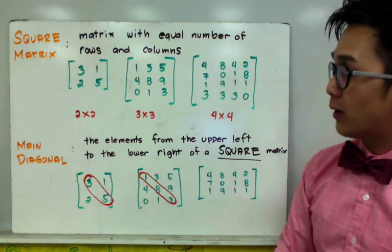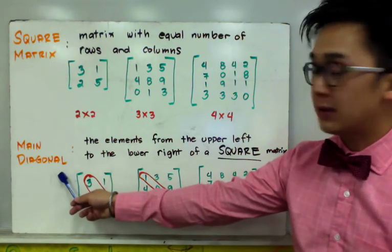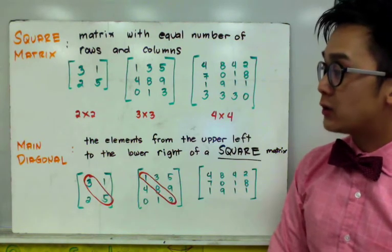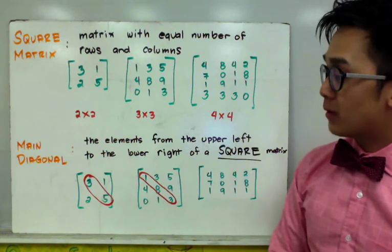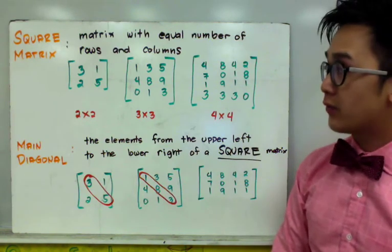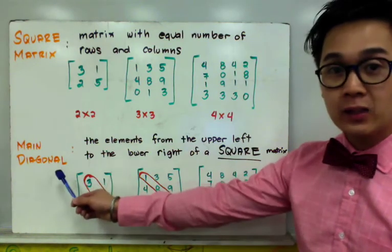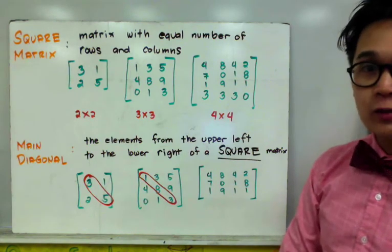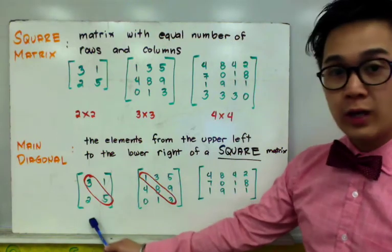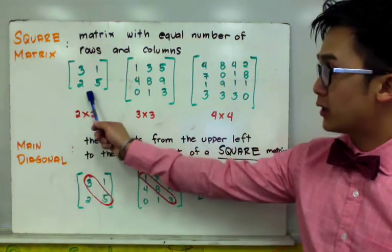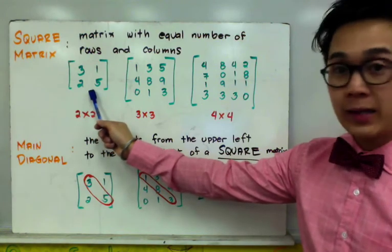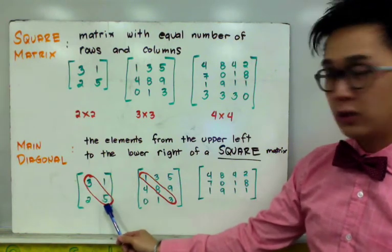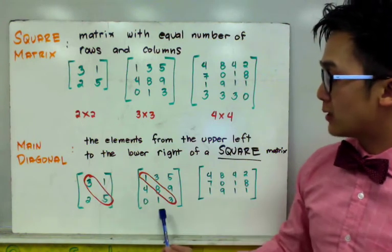Another term in linear algebra is the main diagonal. These terms will be used in studying further methods of applying matrices. The main diagonal is defined as the elements from the upper left to the lower right of a square matrix. For example, in a 2 by 2 square matrix, the main diagonal entries are 3 and 5.